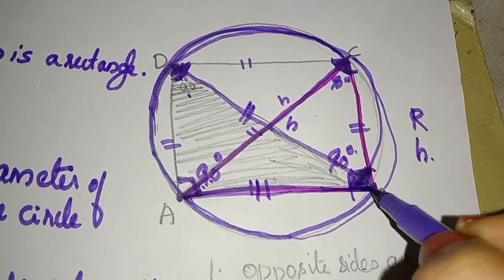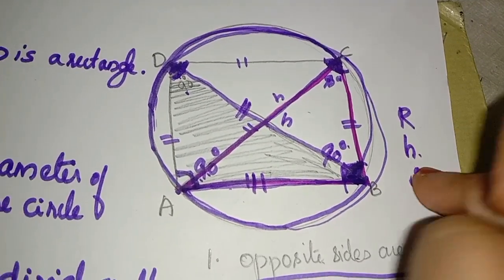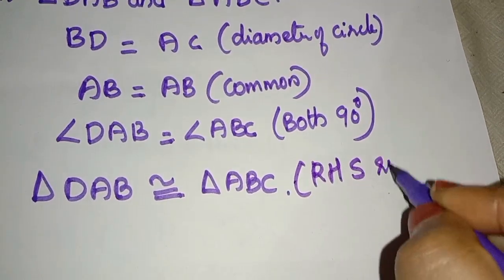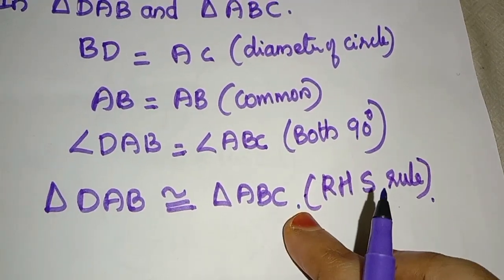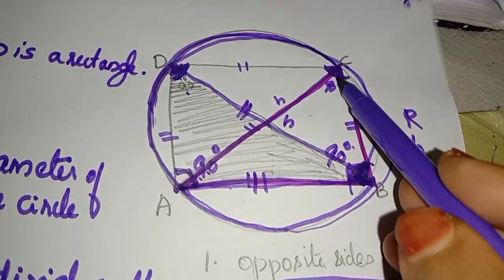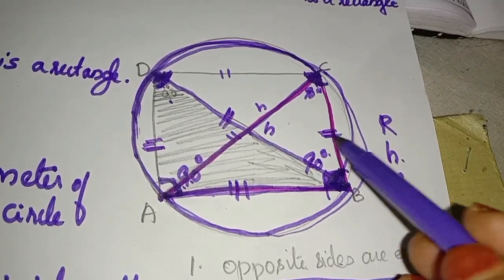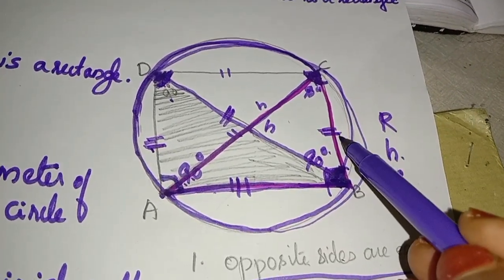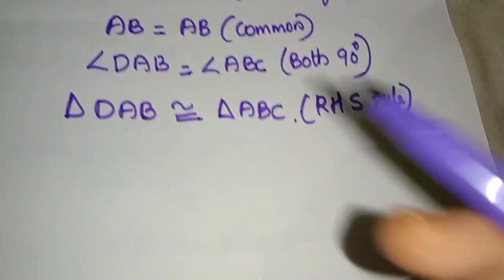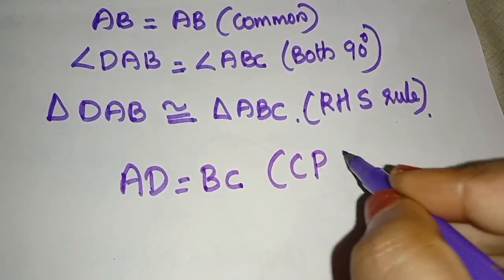This rule is the RHS congruency rule. By CPCT rule, AD is equal to BC.